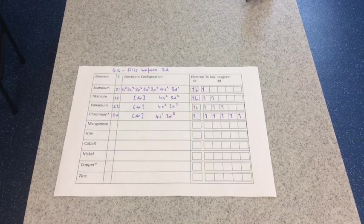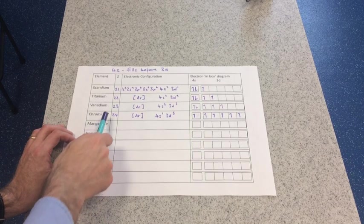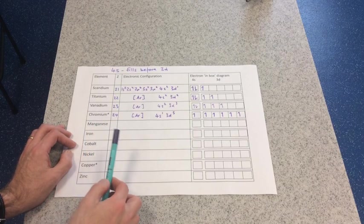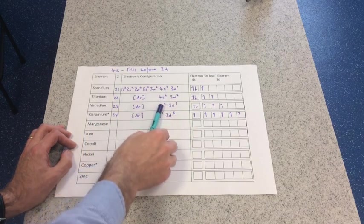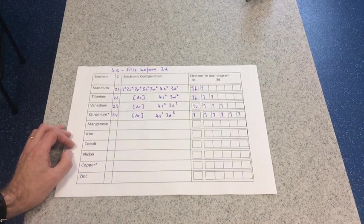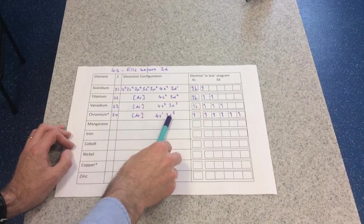I just want to talk you through chromium, because it's a bit unusual. That's why there's a star next to it on my table here. So you would expect, following on from this pattern, you would expect it to be 4s2, 3d4. But what it actually does is this, 4s1, 3d5.